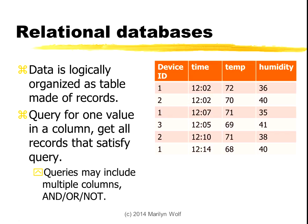We can take that data and do what we want with it — look at the time, the temperature, or the humidity. We can also search the database in different ways. For example, we could ask what records have a time of 12:02 — in that case we would get these two records, one for device ID 1 and one for device ID 2. When we query, we can ask for values in a single column or combine things; for instance, device ID 1 and time equals 12:02 would give us this one record. We can test values and do Boolean combinations. Once we have those records, our application can do interesting things on the values and also update the database.